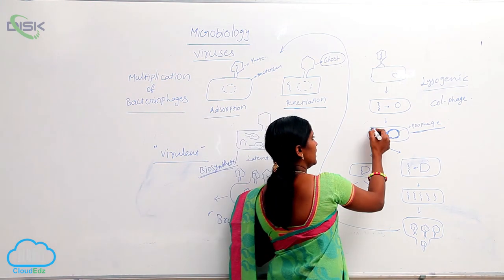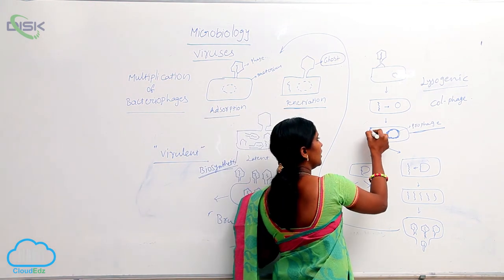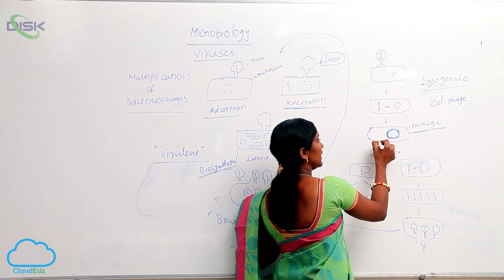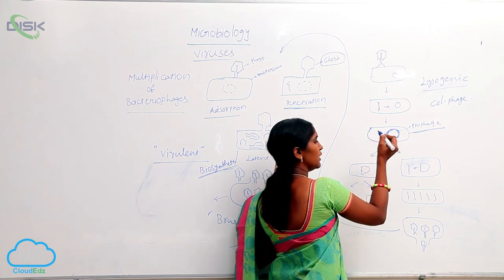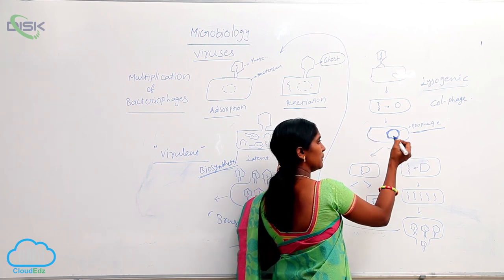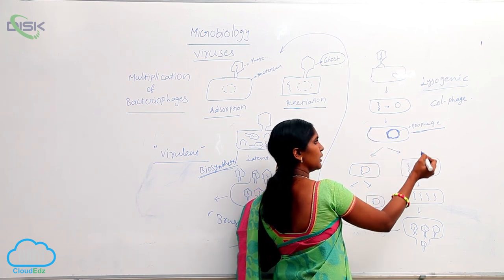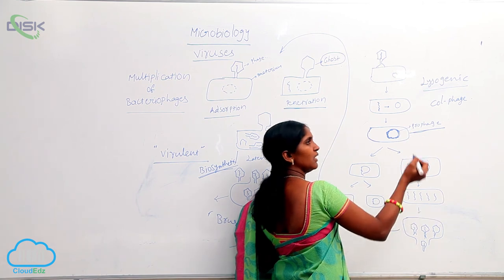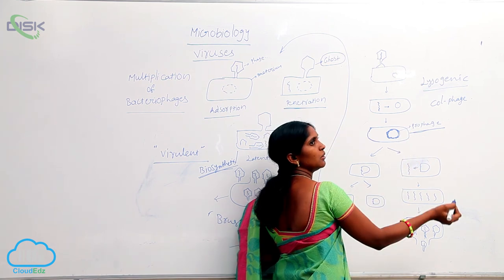As already mentioned, if the viral DNA is dominant, the bacterial DNA becomes inactive, and that is what enters into the lytic pathway.